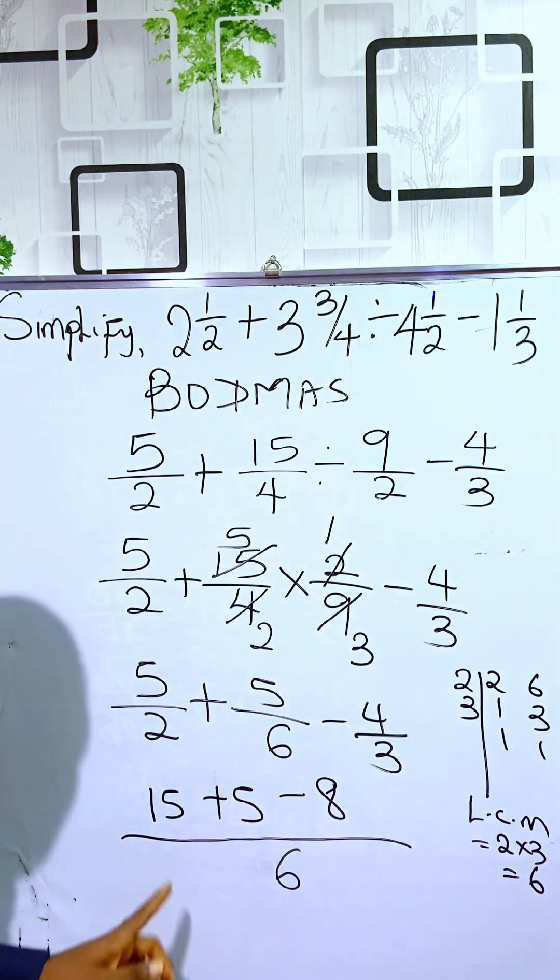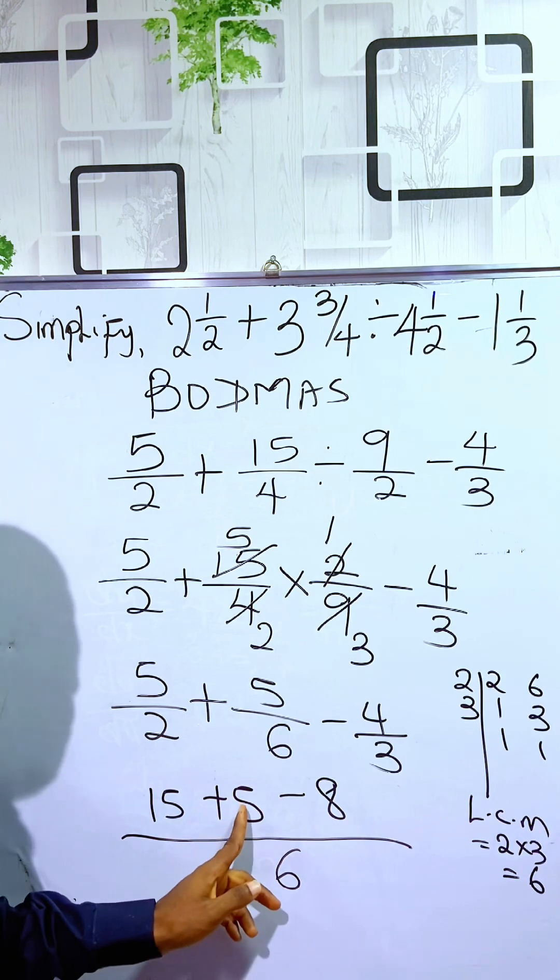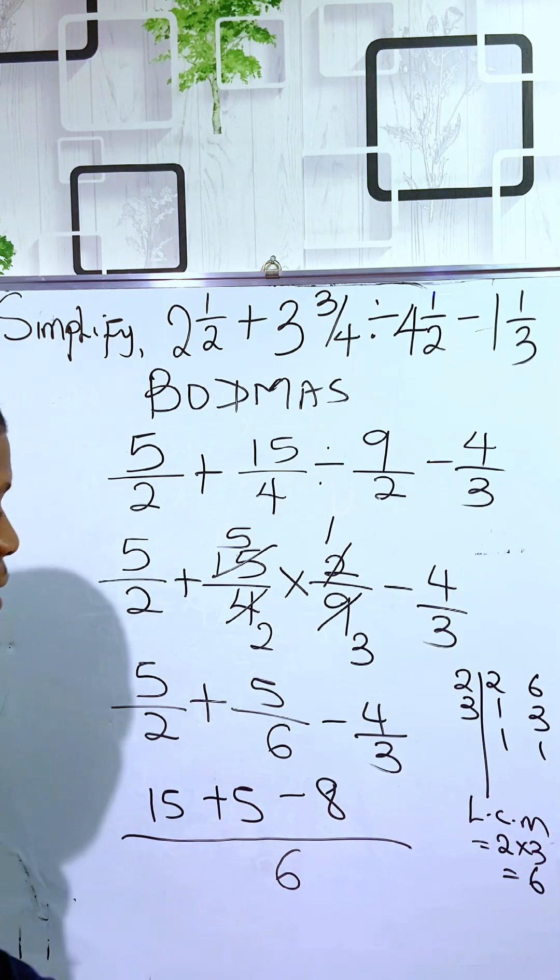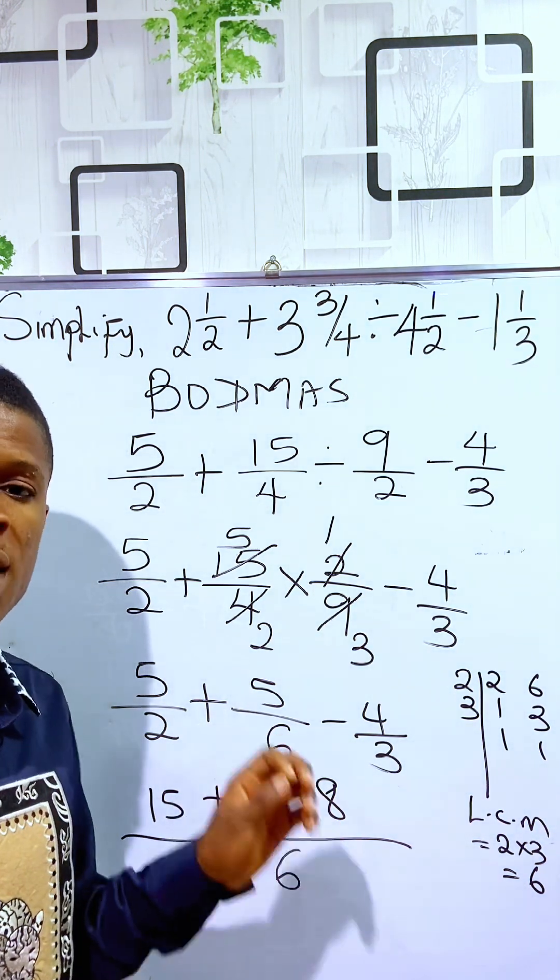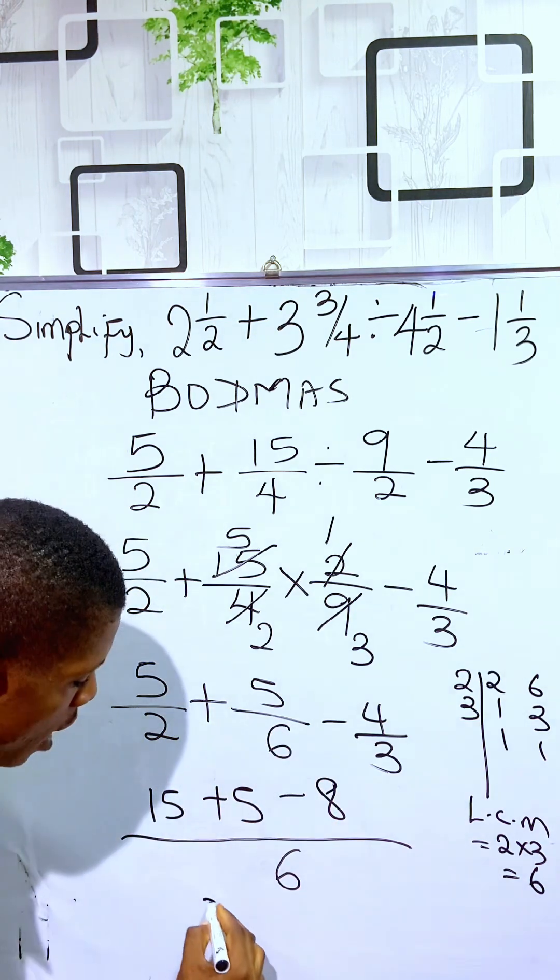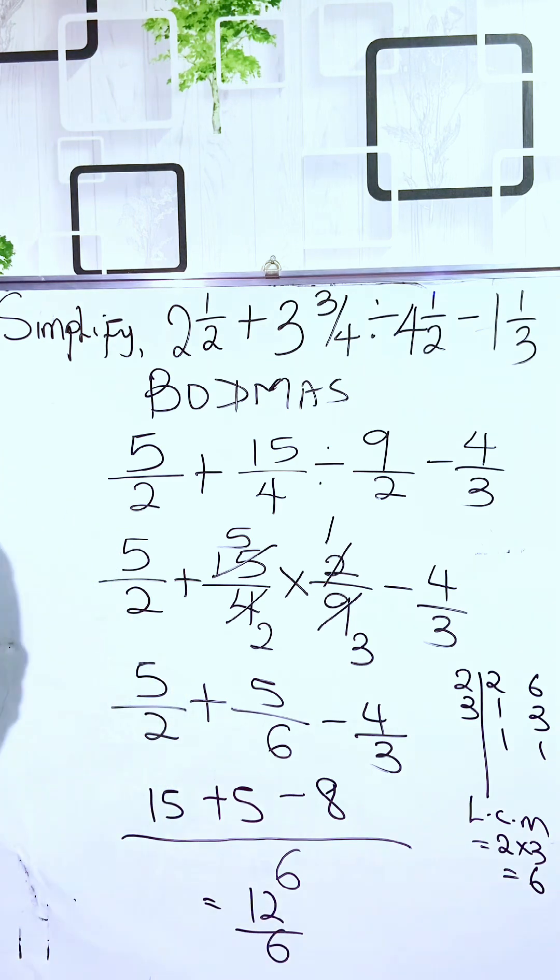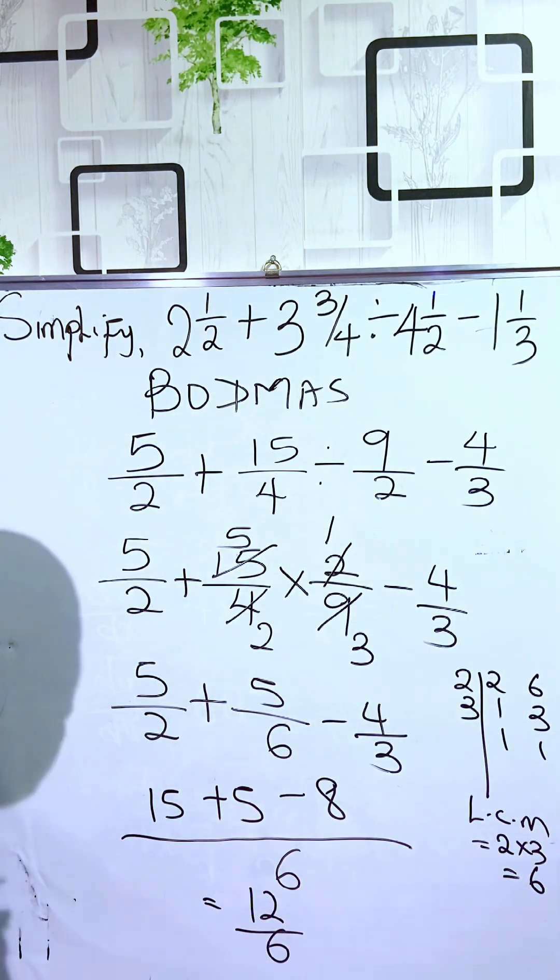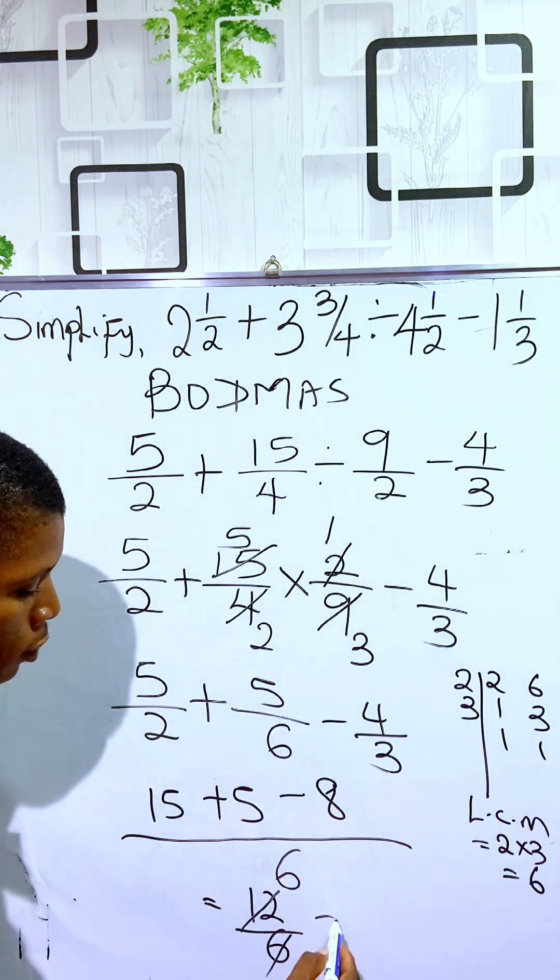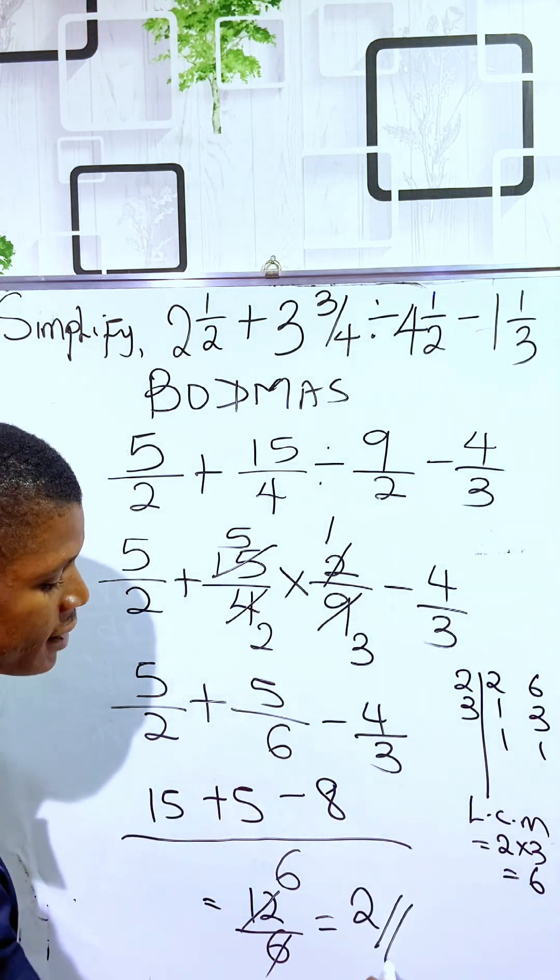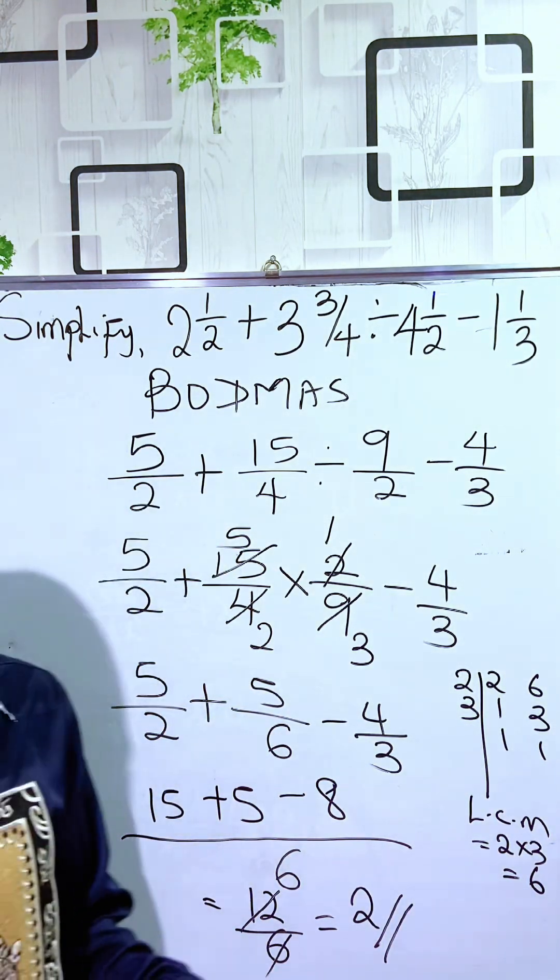So, here, we have 15 plus 5 is 20. 20 minus 8 is 12. So, here, we have 12 over 6. So, when you divide 12 by 6, you are getting it to be worth 2. So, at a simplified form, this fraction is 2.